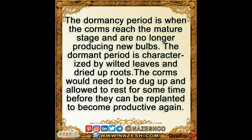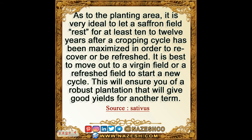During dormancy, the corms need to be dug up and allowed to rest for some time before they can be replanted to become productive again. It is ideal to let a saffron field rest for at least 10 to 12 years after a cropping cycle has been maximized, in order to recover or be refreshed.